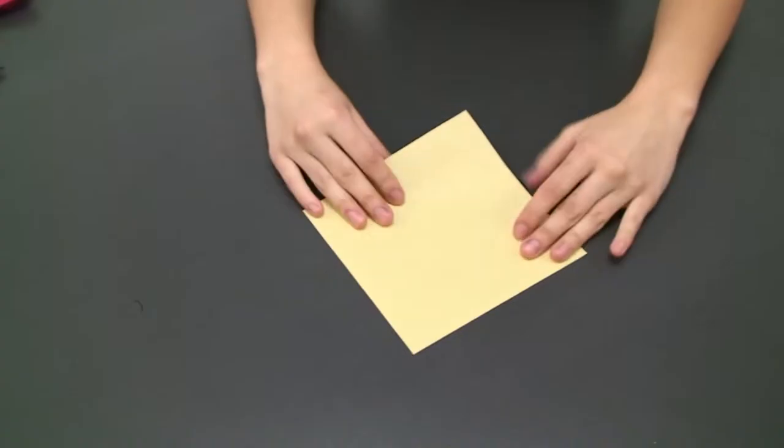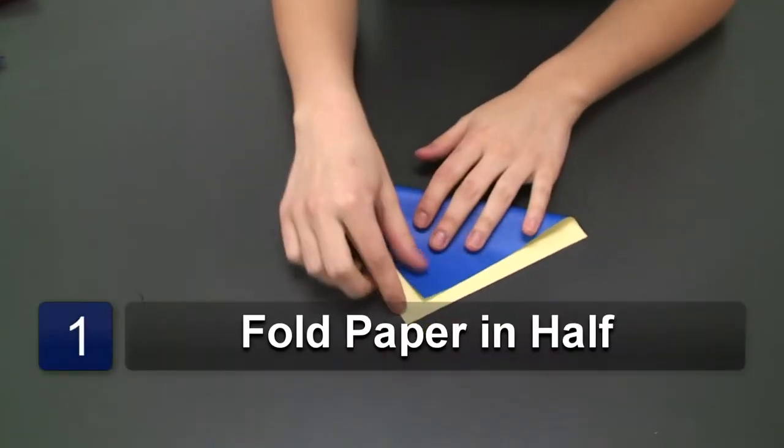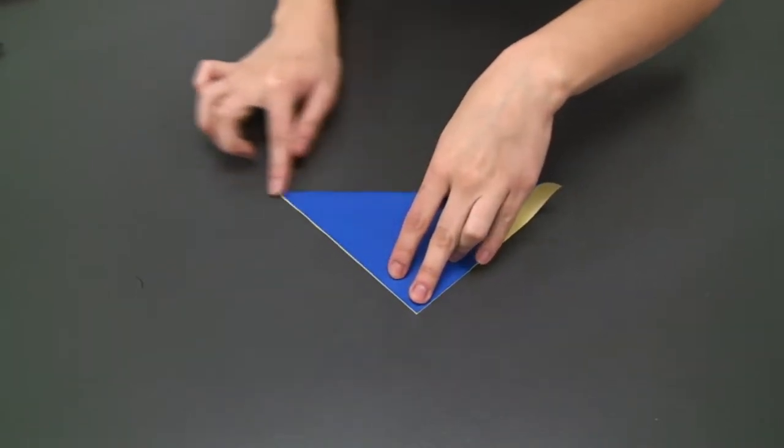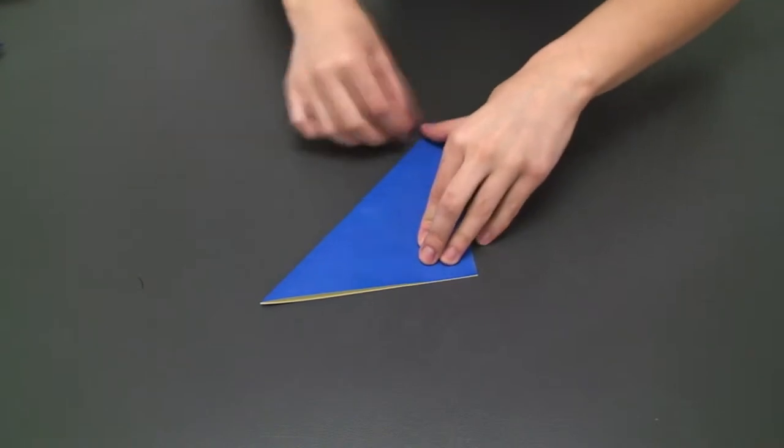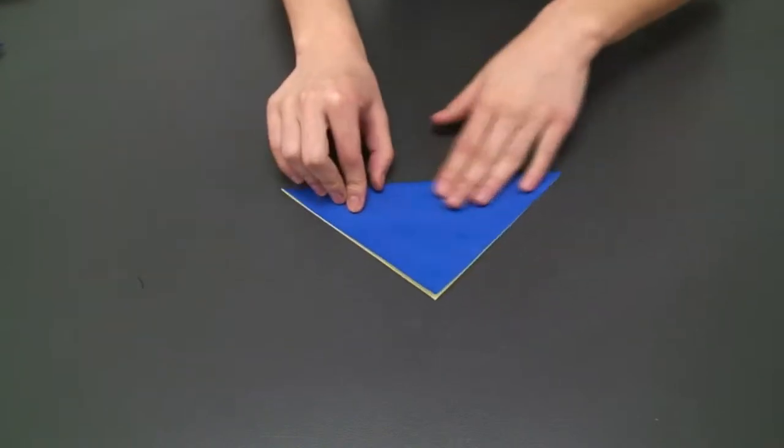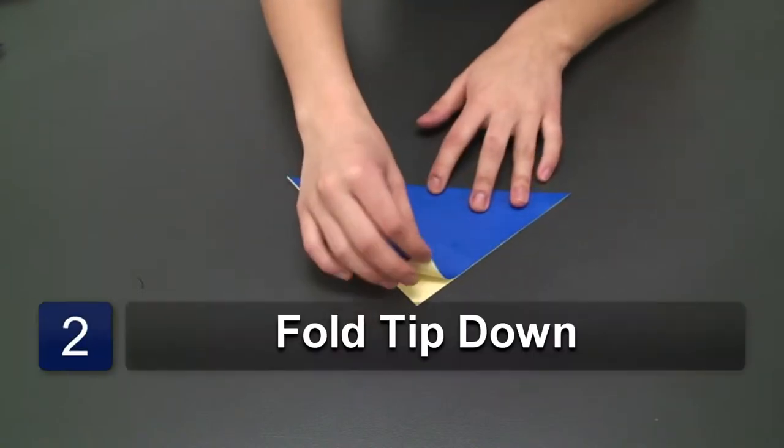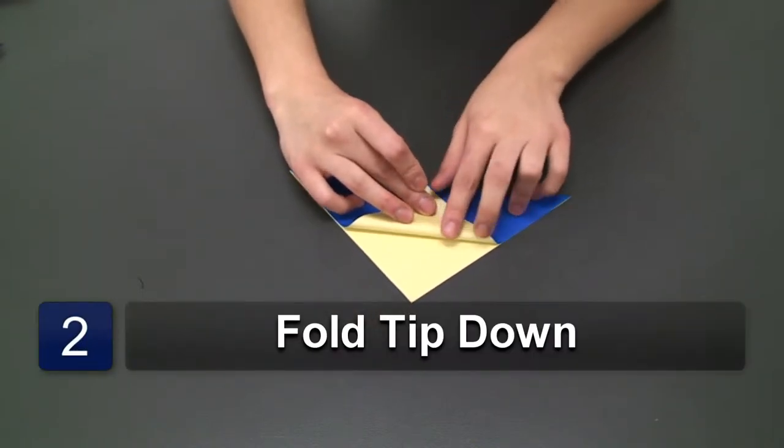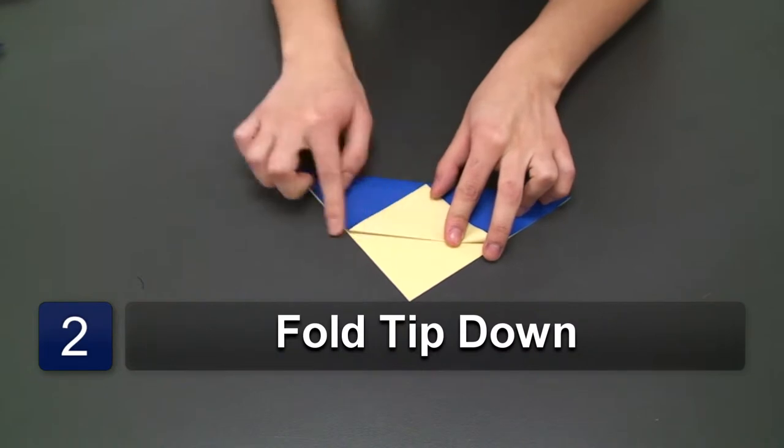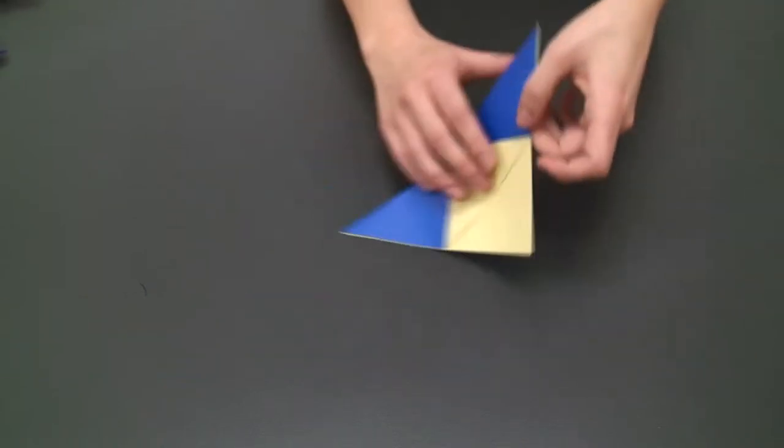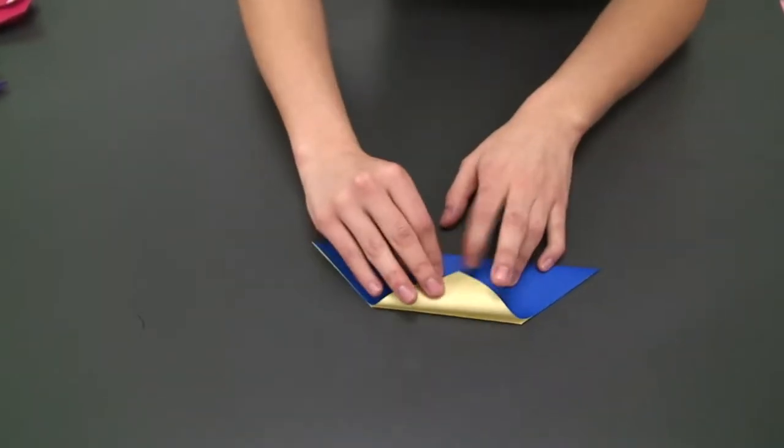So for this project you will need a square piece of paper and we're going to start by creating a triangle, holding it in the middle and now we're going to bring the tip down, open, turn it, repeat.